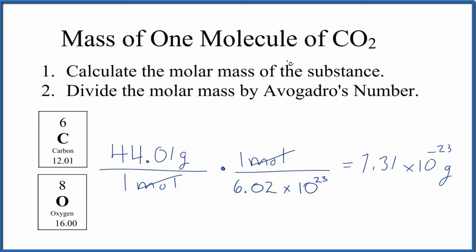If you wanted to know the mass of one molecule of CO2 in kilograms, you just divide this by a thousand. You get 7.31 times 10 to the negative 26.